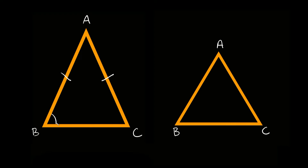So this angle would be congruent to this angle. And it also works in reverse — if these two angles down here are congruent, then the opposite sides are also the same. And it works the same with an equilateral triangle. An equilateral triangle is a triangle where all the sides are the exact same length and all the angles are the exact same also.